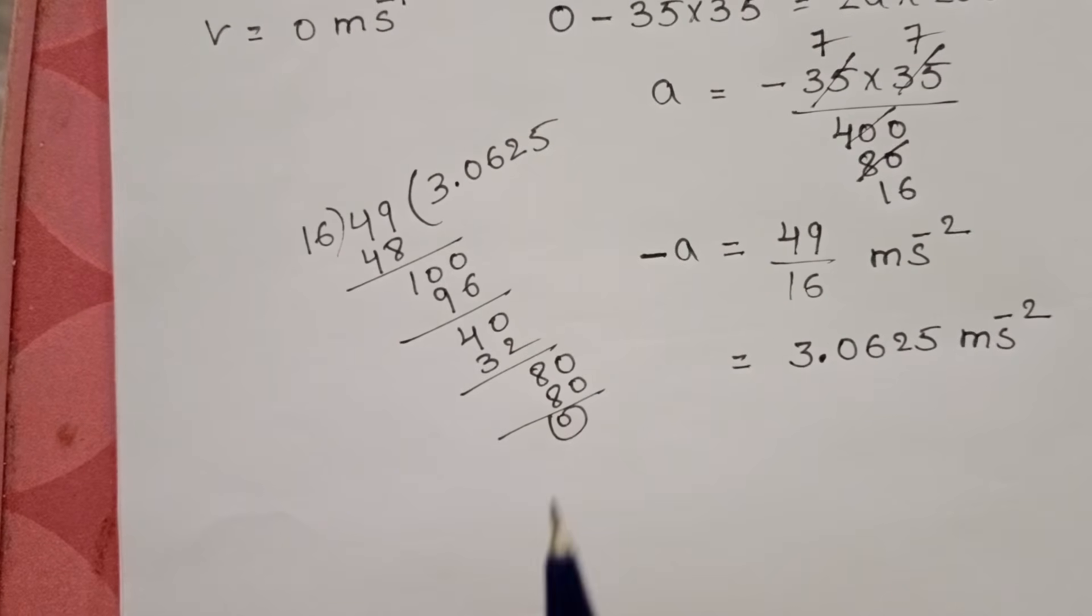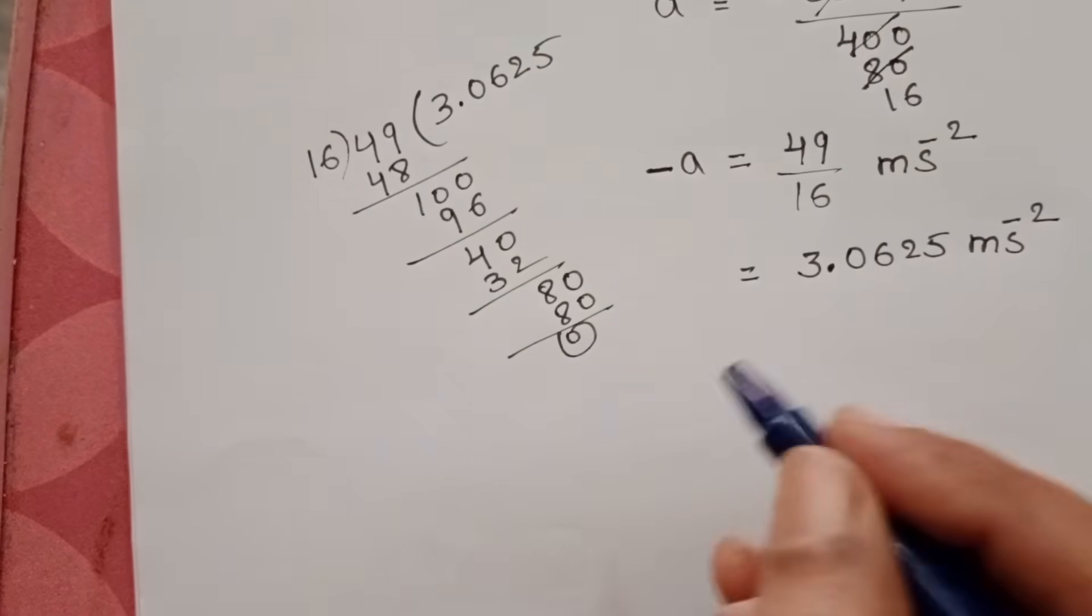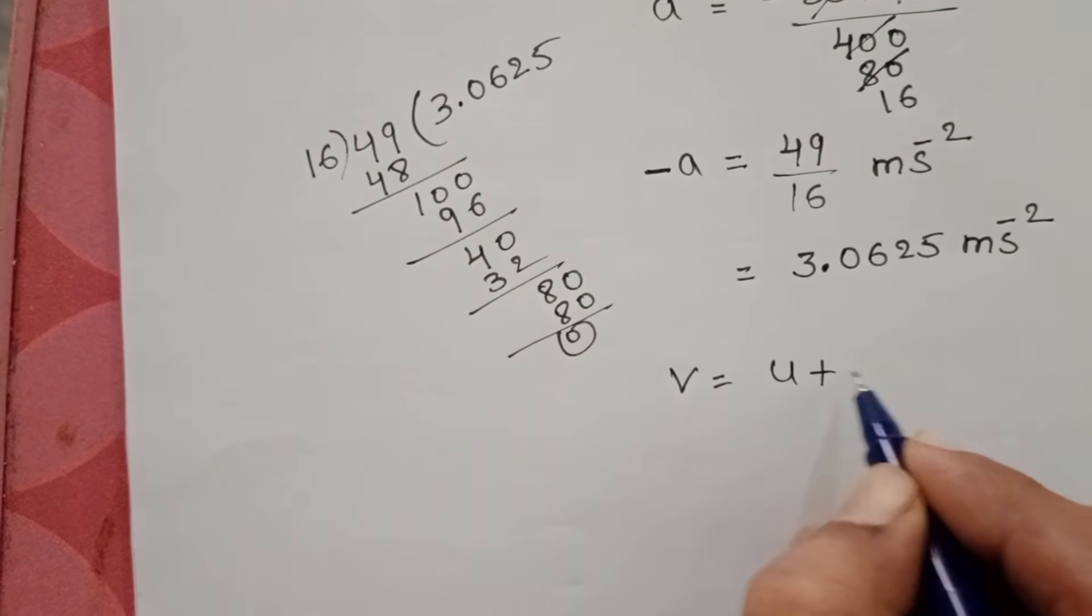Now we have to find out the time taken by the car. Take the first equation of motion: V equals U plus AT.